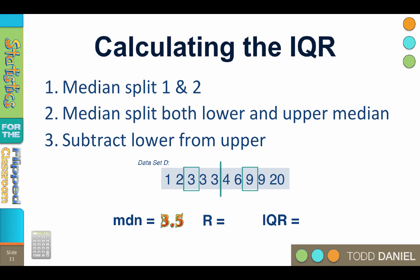We can see that the range here is 19, but the interquartile range is 6. Notice that the outlier, 20, greatly increases the range, but does not affect the interquartile range at all.